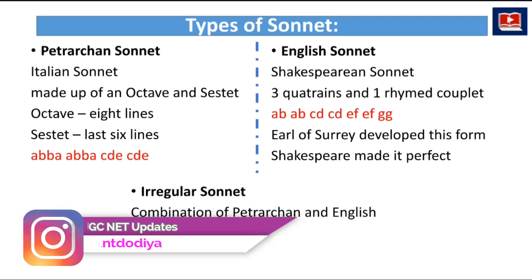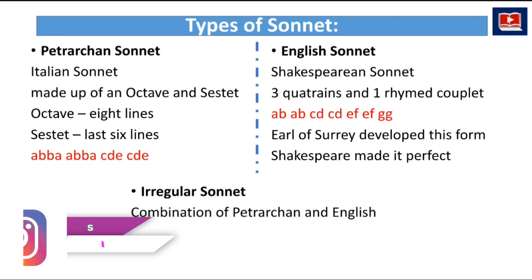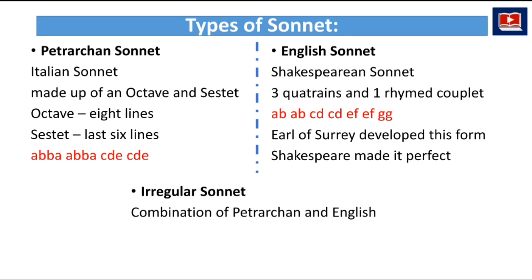There are three different types of sonnets, but two of them are major. The first is the Petrarchan sonnet, which is an Italian sonnet made up of an octave and a sestet. The octave has eight lines with the rhyme scheme ABBAABBA, and the sestet has six lines with the scheme CDECDE. So, the Petrarchan sonnet has one octave and one sestet.